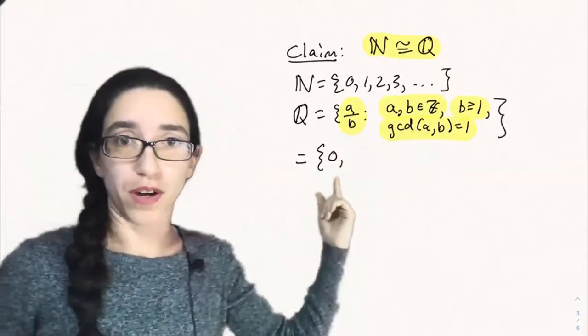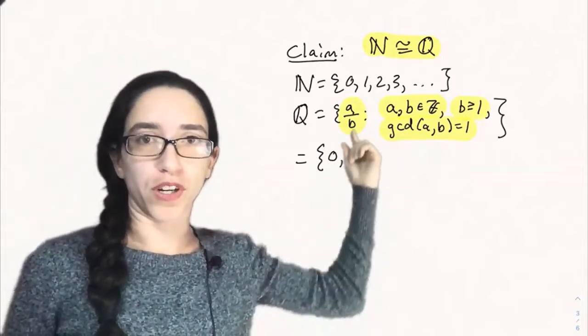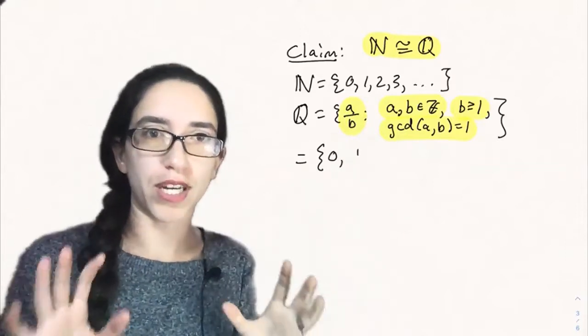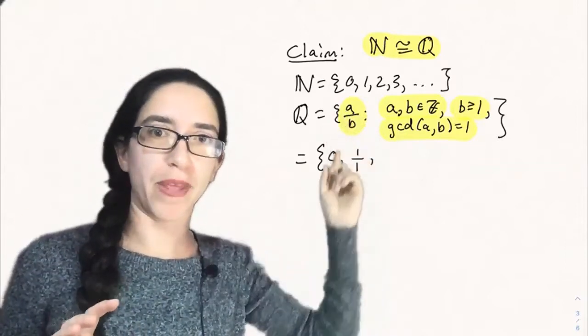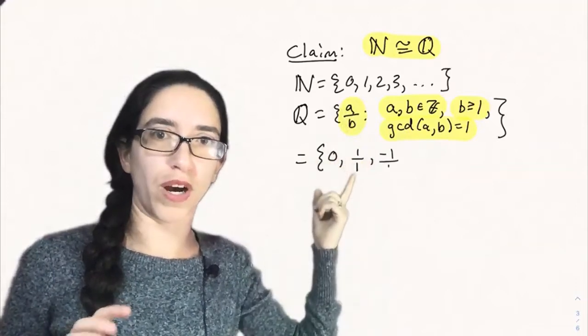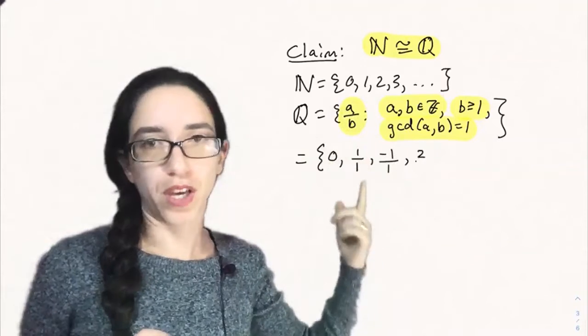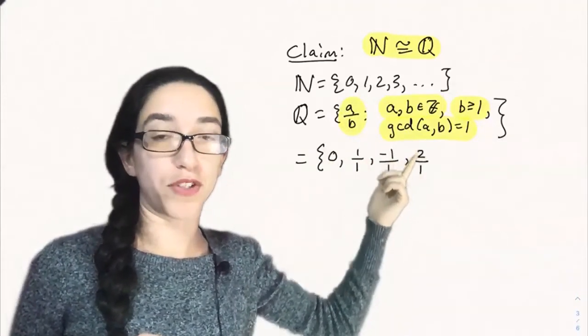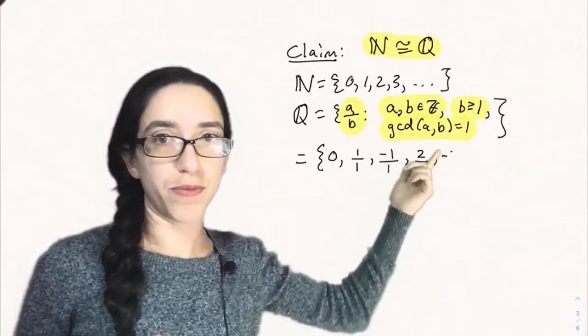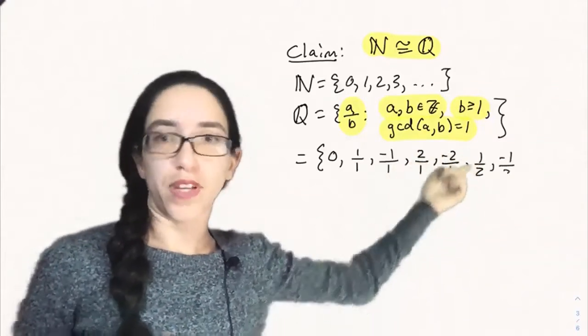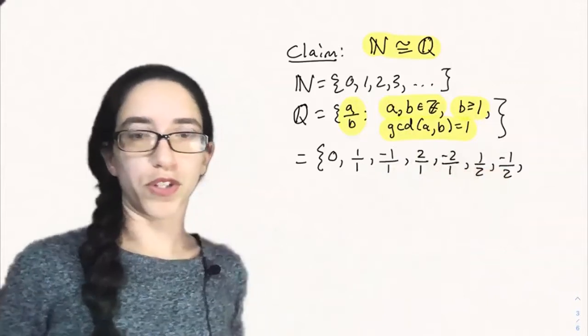So now can we list all of the elements of the rational numbers in some order? It seems pretty hard. But when we think about it, let's start with 0 and let's list them in order of the sum a plus b. Let's first consider the smallest possible sum a plus b can be. That would be 2. We have 1 over 1 and then the negative of that as well, just like we did for Z. Minus 1 over 1. Now if the sum of the a and b is 3, we could have 2 over 1 and its negative, minus 2 over 1. Or 1 over 2 and then we list its negative, minus 1 over 2.